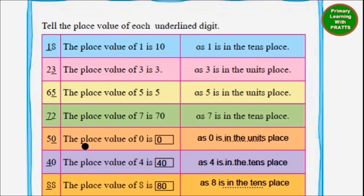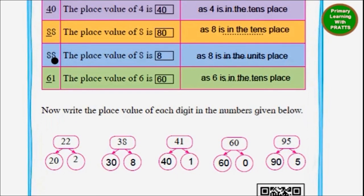In 50, the digit 0 is underlined — the place value of 0 is 0, as 0 is in the units place. In 40, the place value of 4 is 40, as 4 is in the tens place — 4 into 10. In 88 with the tens digit underlined, the place value of 8 is 80 — 8 into 10. Again in 88 but with the units digit underlined, the place value of 8 is now 8 — 8 into 1. In 61, the place value of 6 is 60, as 6 is in the tens place — 6 into 10.